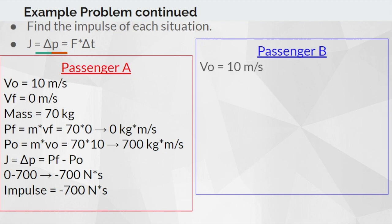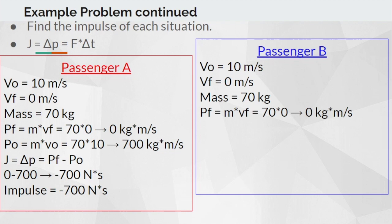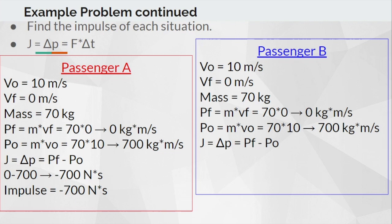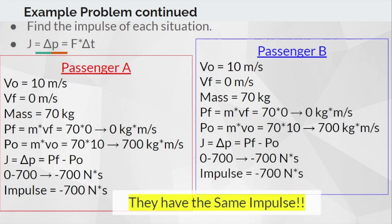For passenger B: initial velocity 10 m/s, final velocity 0 m/s, mass 70 kg. Final momentum is 70 × 0 = 0 kg·m/s, and initial momentum is 70 × 10 = 700 kg·m/s. Therefore their impulse is also negative 700 Newton·seconds — the same as passenger A. That makes sense because their initial and final velocities and masses are the same, so the change in momentum is identical.